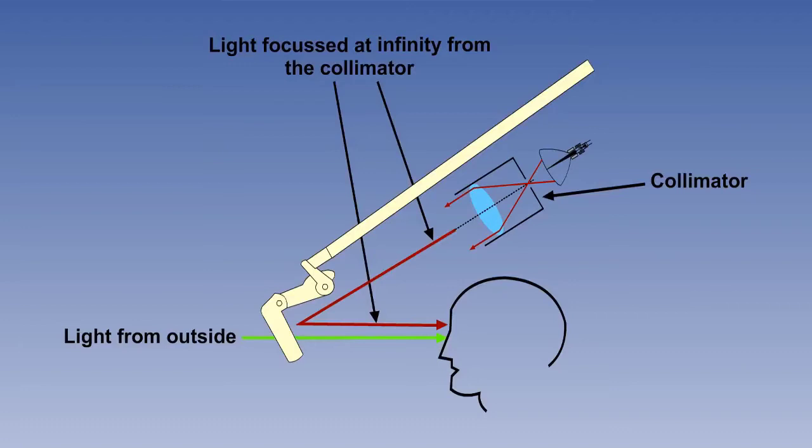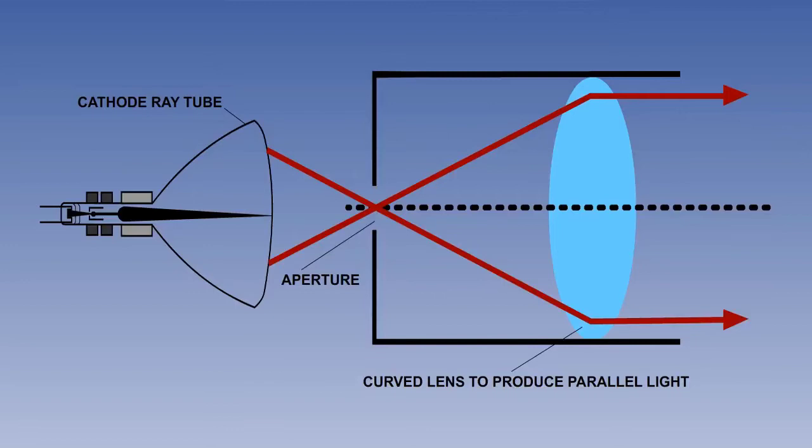This is achieved by designing the projector as a collimator. A collimator is an optical device which usually incorporates a curved mirror or lens with the light source and image at its focus. This arrangement replicates a target at infinity.